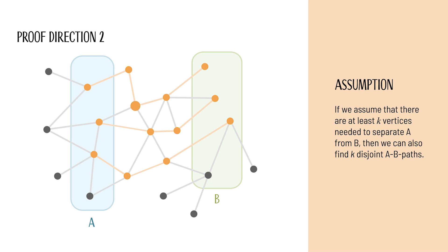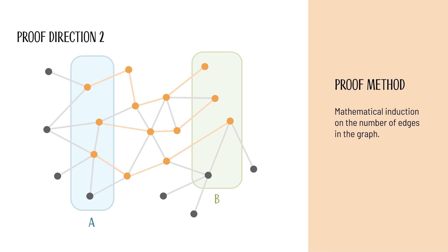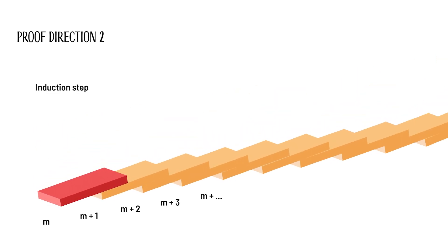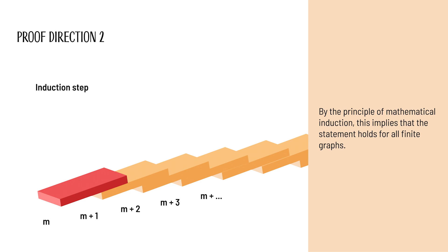If we assume that at least K vertices are needed to separate A from B, then we can also find K disjoint AB paths. For this proof, we use mathematical induction on the number of edges in the graph. Therefore, we first show that the statement holds for a graph with no edges. This is the base case of the induction. Mathematical induction works like a series of falling dominoes. We prove that if the statement holds for all graphs with m edges and fewer, then it also holds for graphs with m+1 edges. This is the inductive step. By the principle of mathematical induction, this implies that the statement holds for all finite graphs.